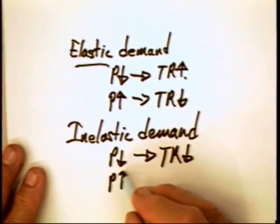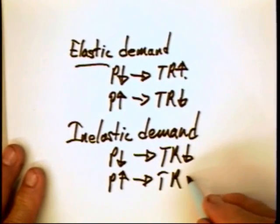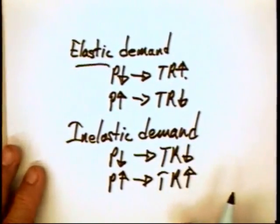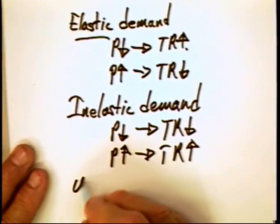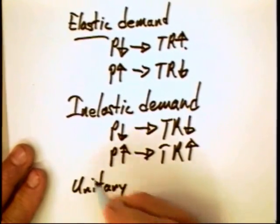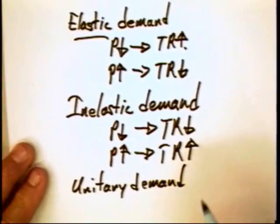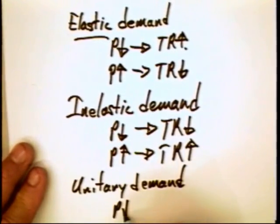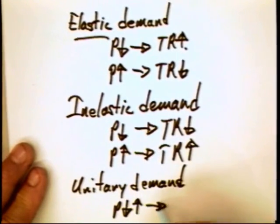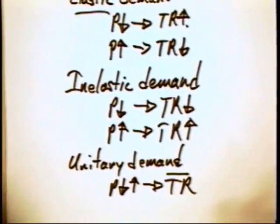Under inelastic demand, an increase in the price is going to lead to an increase in total revenue. There is also one intermediate case which we refer to as unitary elastic demand. This is a case in which it doesn't matter whether the price goes down or up — the total revenues remain constant.